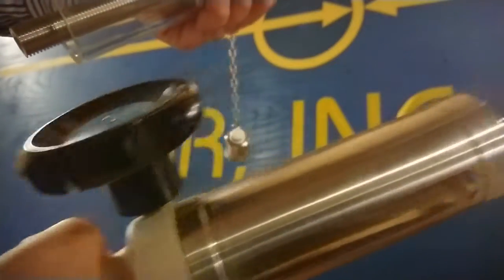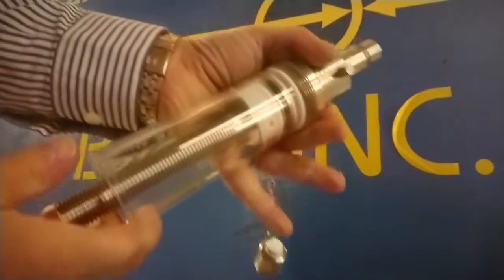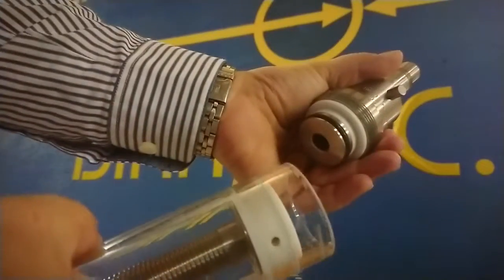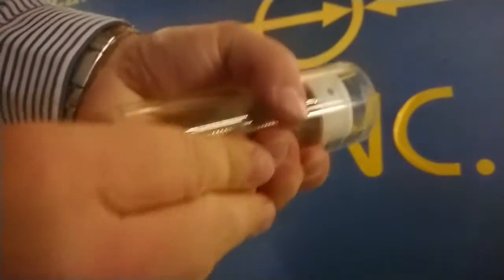The handle and piston stay together. We can separate the cylinder, the nose, and the piston.